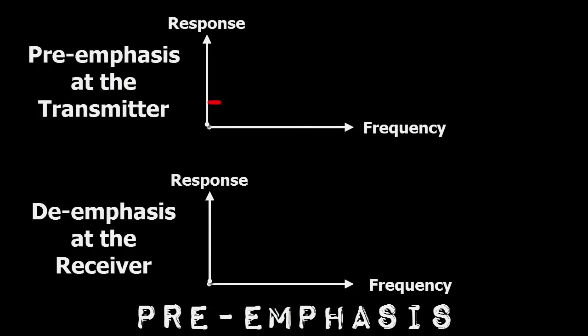Pre-emphasis is a progressive treble boost designed to boost the level of high frequencies over the noise floor. In every radio receiver, a corresponding de-emphasis network attenuates the treble by exactly the same amount.